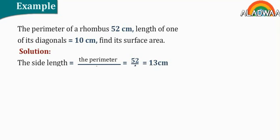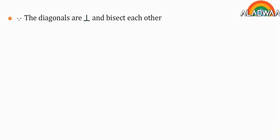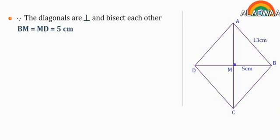Solution: The side length equals the perimeter divided by 4, equals 52 divided by 4 equals 13 cm. Since the diagonals are perpendicular and bisect each other, then BM equals MD equals 5 cm.